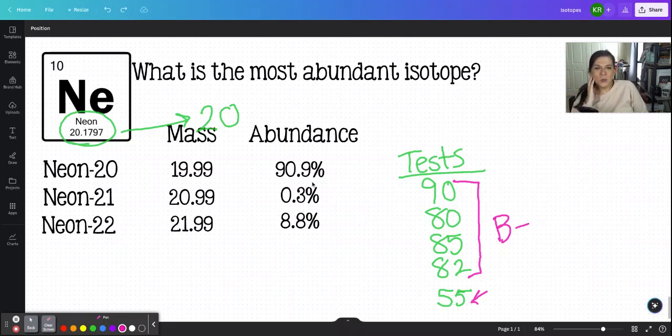The same thing's happening here. We have a lot of neons. If we had a hundred neons, 91 of them would be this neon 20, which means that like, give yourself a hundred tests, right? In your grade book. If you got an A on 91 of them, then your grade is probably going to be an A in the class, right? So the same thing is happening here. This average is super close to 20. So we can assume that 20 is going to be the most abundant isotope.